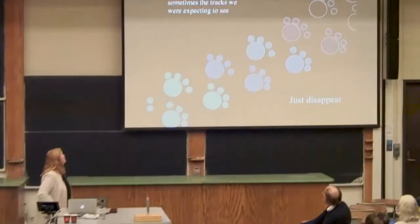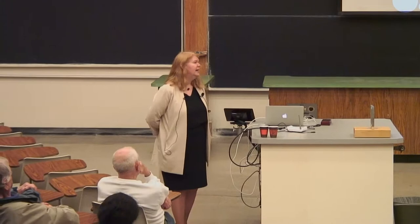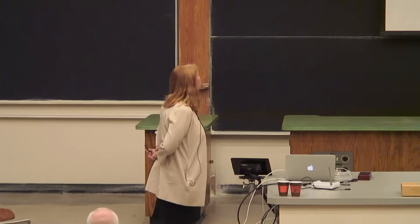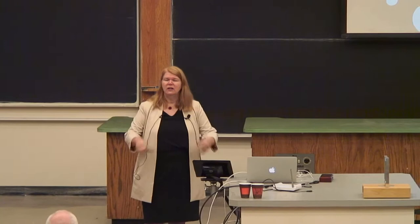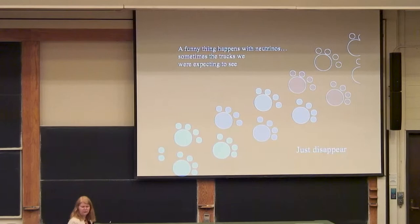We have seen neutrino interactions in lots of detectors — it was actually in the 1950s that we saw our first neutrino interaction. Fairly early on, we discovered a very strange problem: sometimes neutrinos come into our detector and don't seem to interact at all. It's like the neutrinos disappear. We see tracks and then move our detector, and there's just no sign of the neutrinos at all. And then they may come back again.